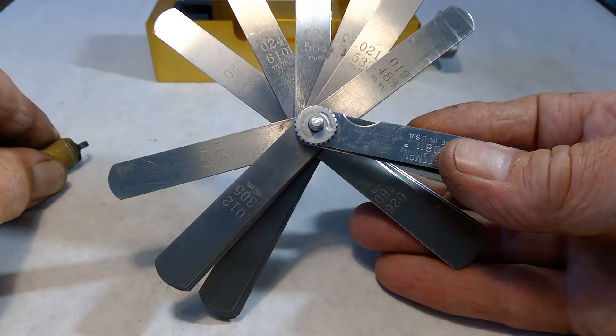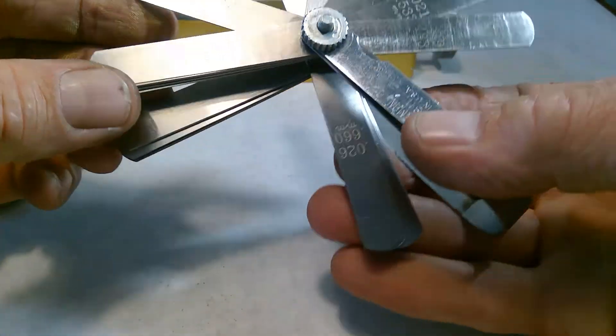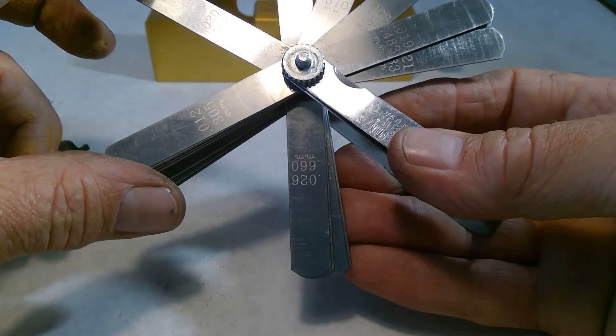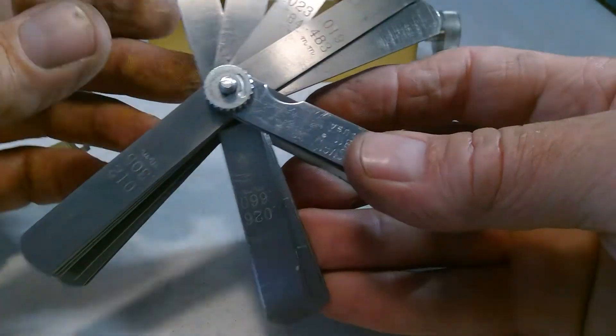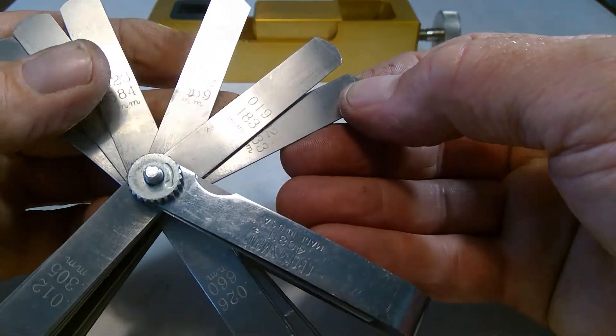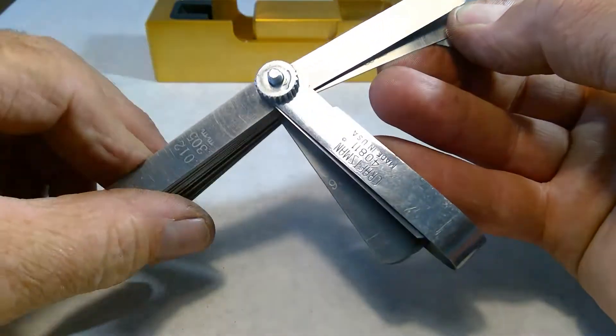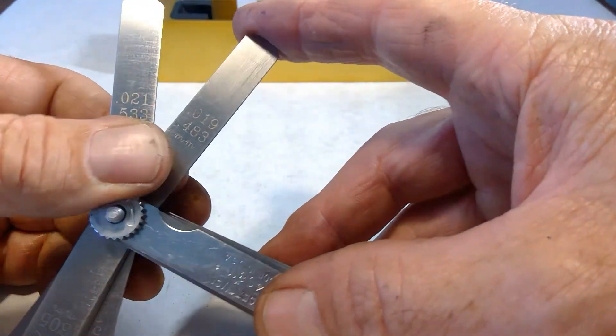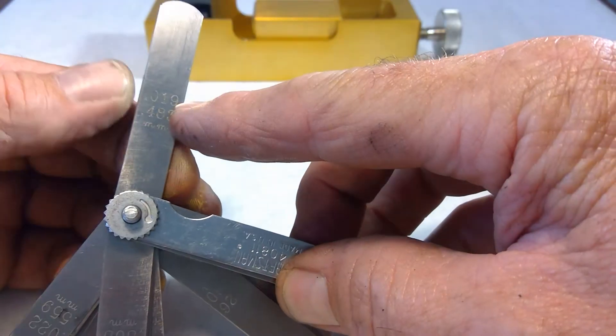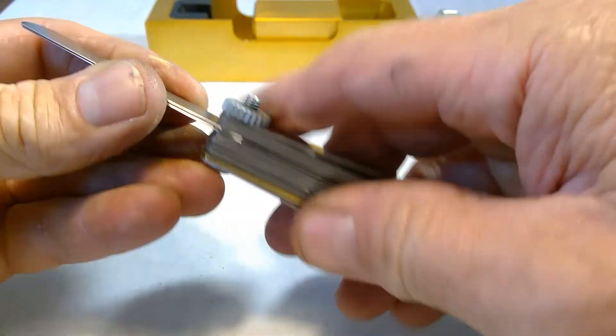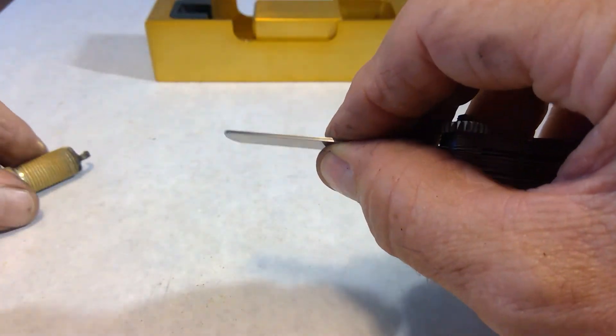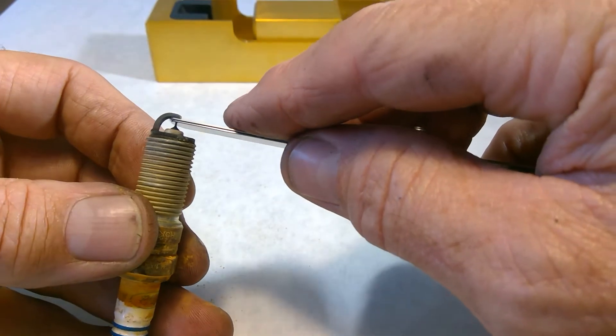If I wanted a 40 thousandths gap, I don't have a 40 thousandths feeler gauge here. So, what I could do is I could make a 40 thousandths of an inch feeler gauge by combining a couple of gauges. In this case, maybe I take this 19 thousandths and this 21 thousandths, I combine them. Now, I have something that's 40 thousandths of an inch thick, and I can use that to measure a gap.